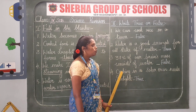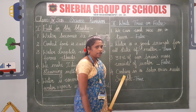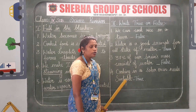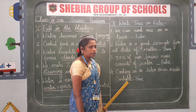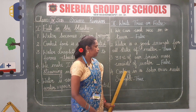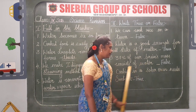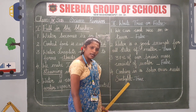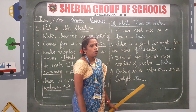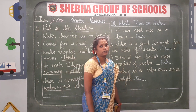Fourth one: cooking in a solar oven needs sunlight. Solar cooking requires sunlight from the sun to cook. So it is a correct statement, write true. Cooking in a solar oven needs sunlight — true. After finishing, draw a line using scale and pencil.